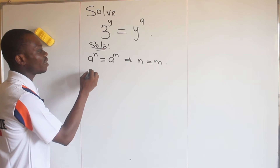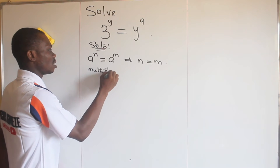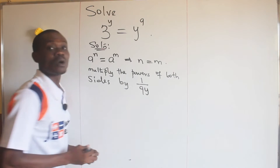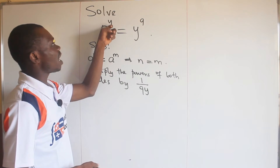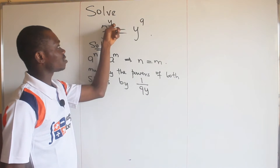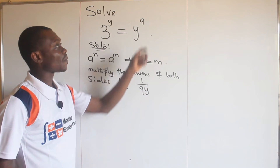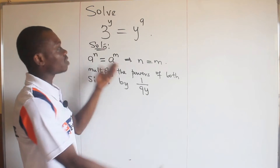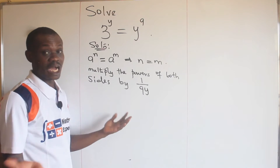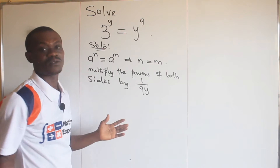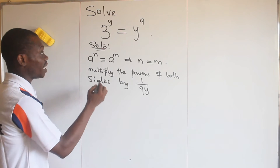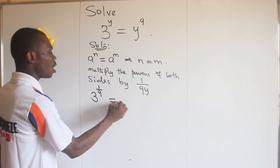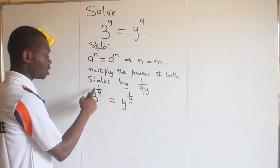From here I can multiply the powers by one over 9y. The y will cancel this y leaving me with only one over nine, and on this side nine will cancel this nine leaving me with one over y. So I would have alphabets on one side and numbers on another side without changing anything, since I'm multiplying on both sides. By doing that multiplication, we get 3 raised to the power of one over nine equal to y raised to the power of one over y.